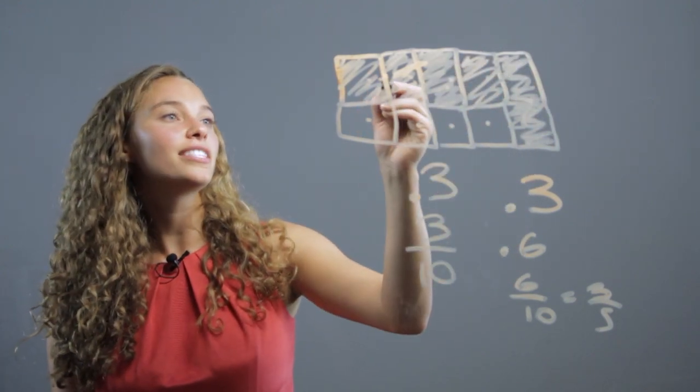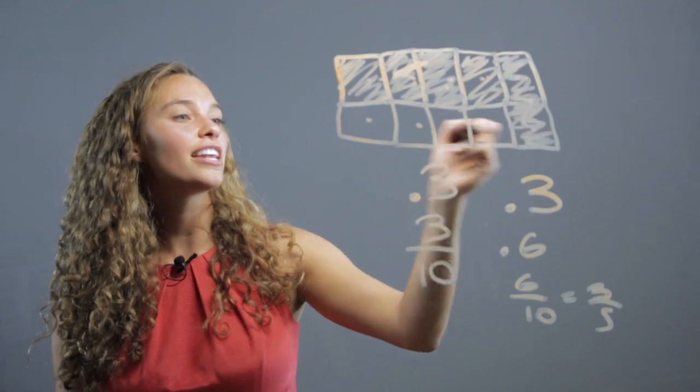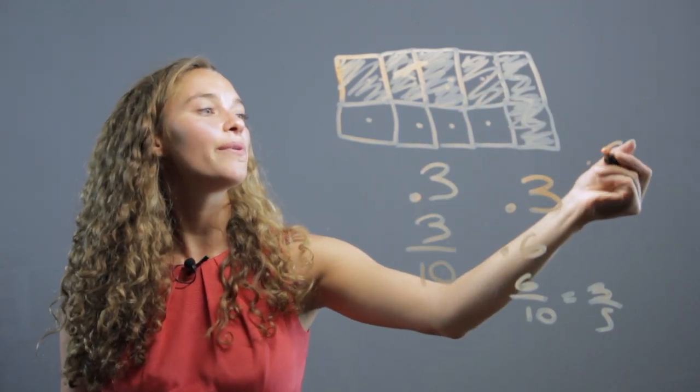And they can visualize it this way and see there's six shaded out of ten, so they make it point six.